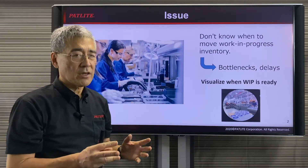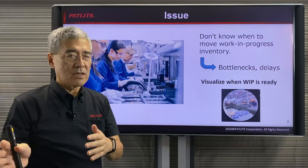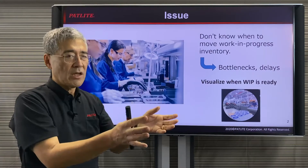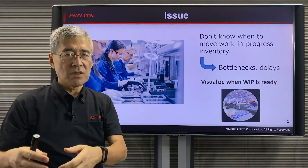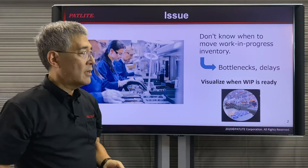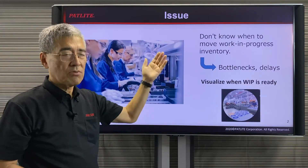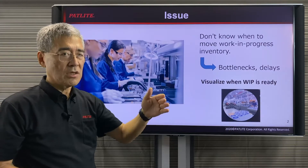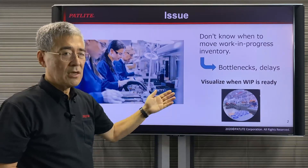To manufacture a product, there are many steps to be taken. Once one process is complete, the product needs to be moved from one location to a different location so the next process could be started. But many times you may not know when this work in progress inventory is ready to be moved, causing delays and bottlenecks.